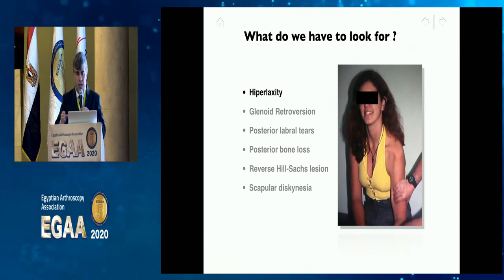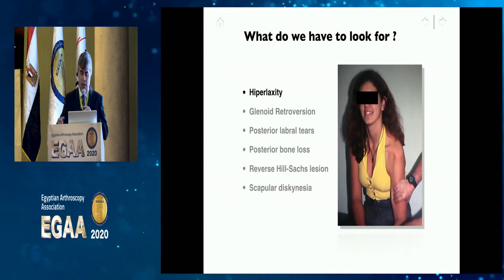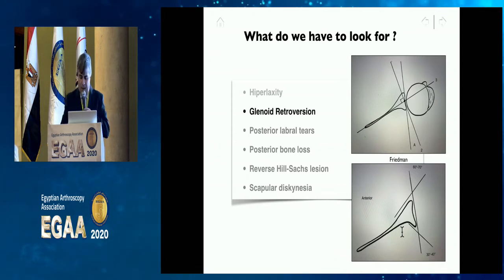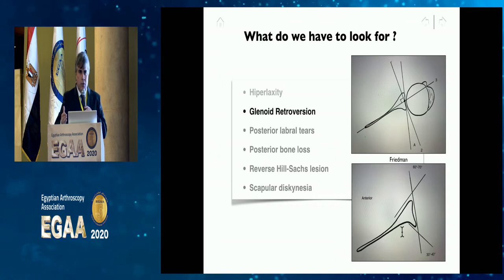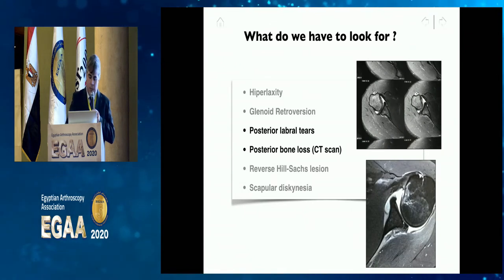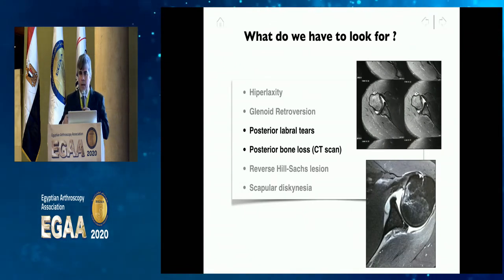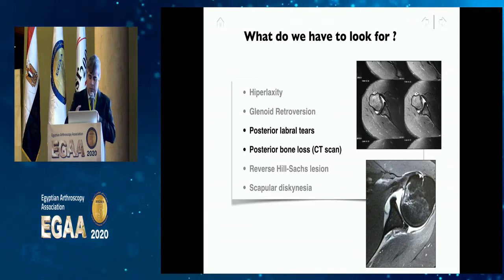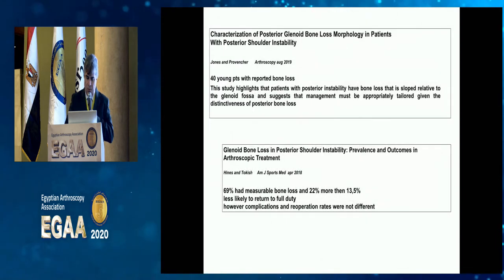When searching for posterior instability, what do you look for? First, hyperlaxity — most patients have multi-directional instability and hyperlaxity together with posterior laxity. What about glenoid retroversion? Some patients will have augmented retroversion, as described by Richard Friedman, and this must be evaluated to determine which procedure to perform. Posterior labral tears and posterior bone loss are very common on MRI, but always correlate imaging with symptoms.